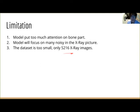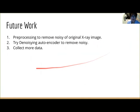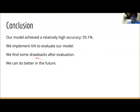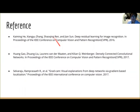So in conclusion, after the evaluation with XAI, we found some limitations. First, our model puts too much attention on the bone part. Second, our model focuses on noise such as the circular sticker and the line in the original image. Third, the dataset is too small — we only have about 5,000 images to train our model. To solve these limitations in the future: we can do data preprocessing to remove noise from the original image, we can try a denoising autoencoder to learn latent representations to remove noise, and we need to collect more data to train our model. Our model achieved a relatively high accuracy of 93.1% and we implemented XAI to evaluate our model, finding drawbacks and limitations, and we believe we can do better in the future.